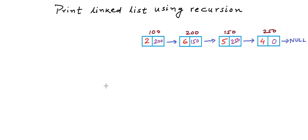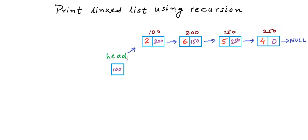Here we have an example of a linked list of integers with four nodes. Each rectangle is a node with two fields: one to store the data and another to store the address of the next node. The four nodes are at addresses 100, 200, 150, and 250 respectively. We also have a variable named head that stores the address of the head node.